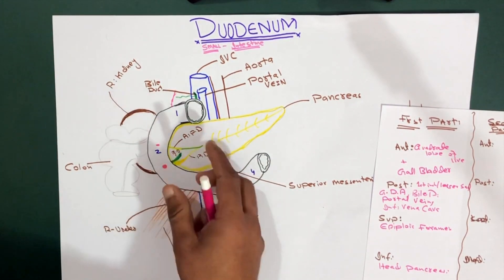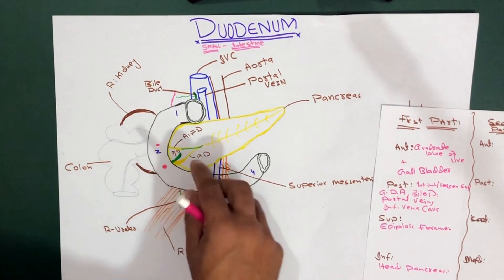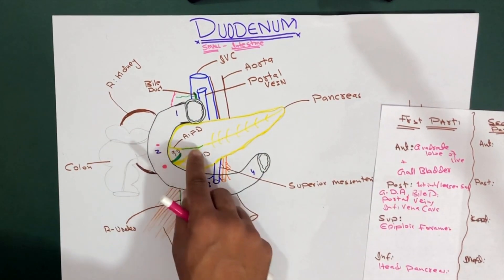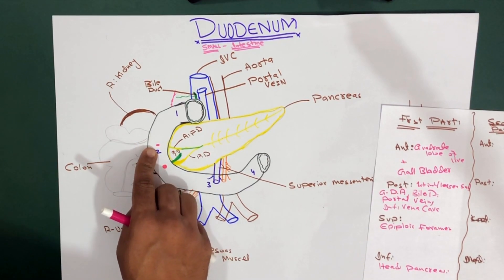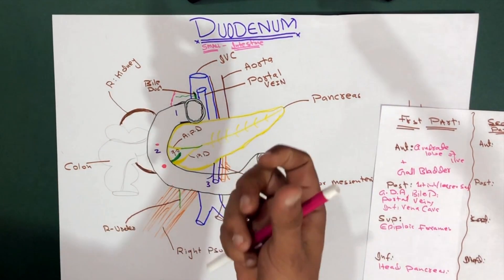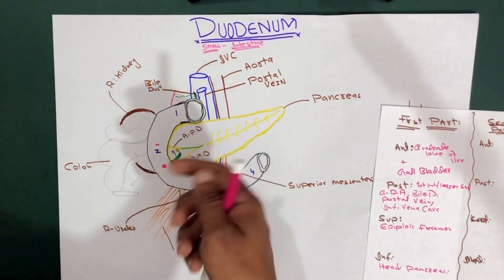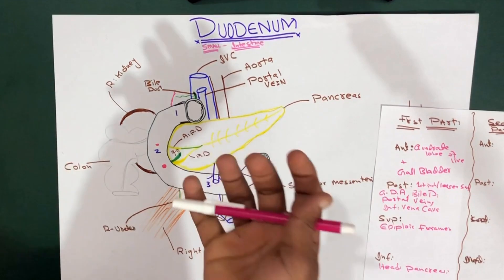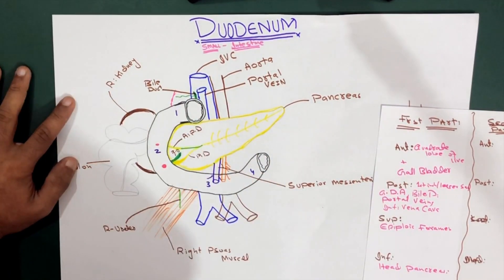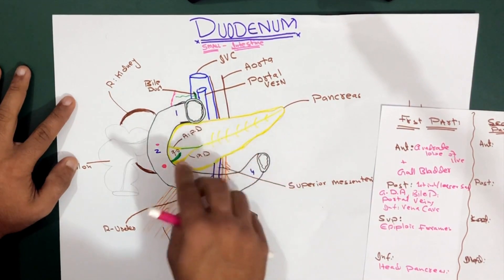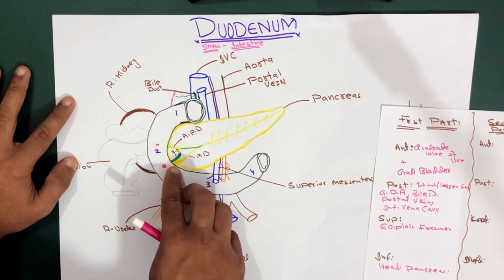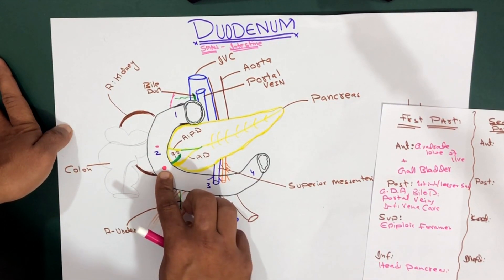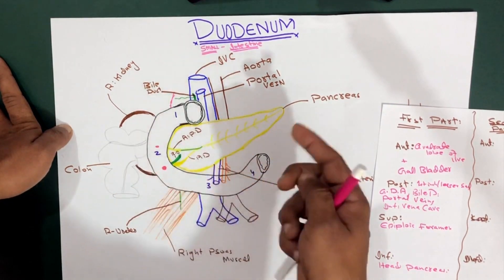These are openings - the major duodenal papilla is a large opening where both the bile duct and the pancreatic duct open together. If there is an accessory pancreatic duct, it opens into the minor duodenal papilla. So in the second part of the duodenum, we have two papillae where the ducts open. Both the bile duct and the pancreatic duct join together to form an ampulla, which ends at the major duodenal papilla.